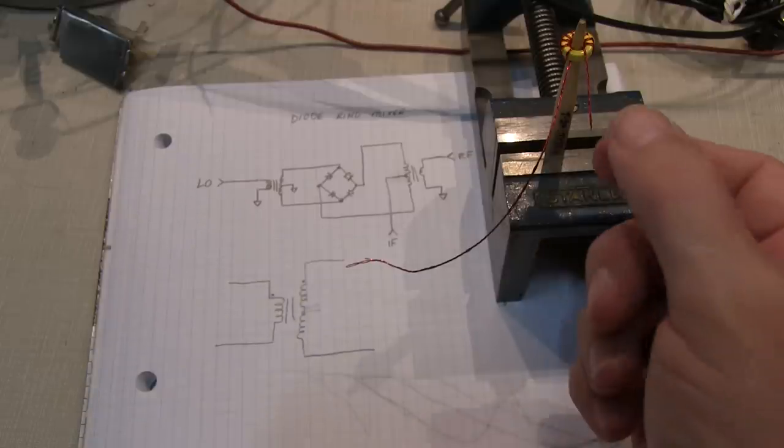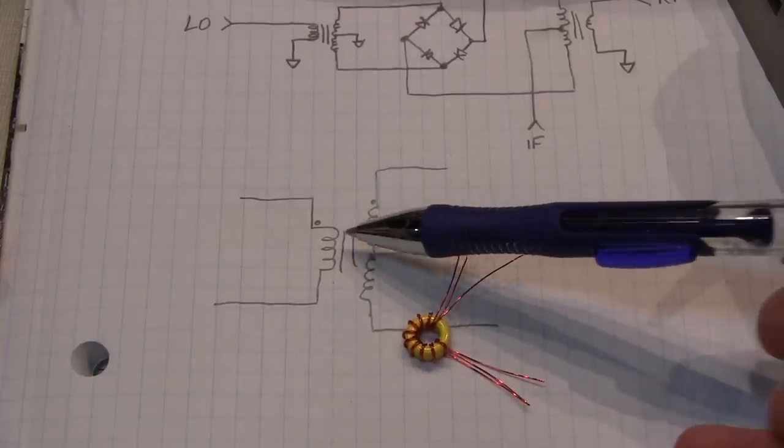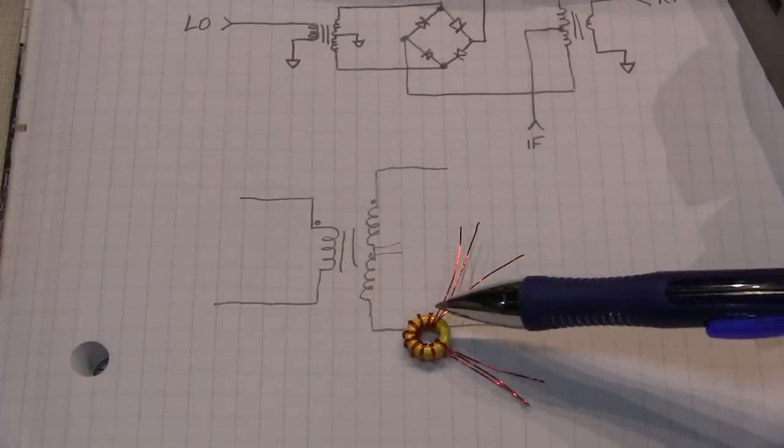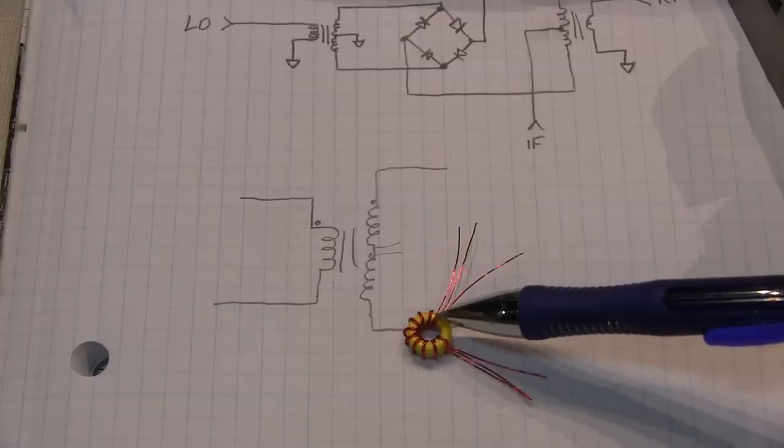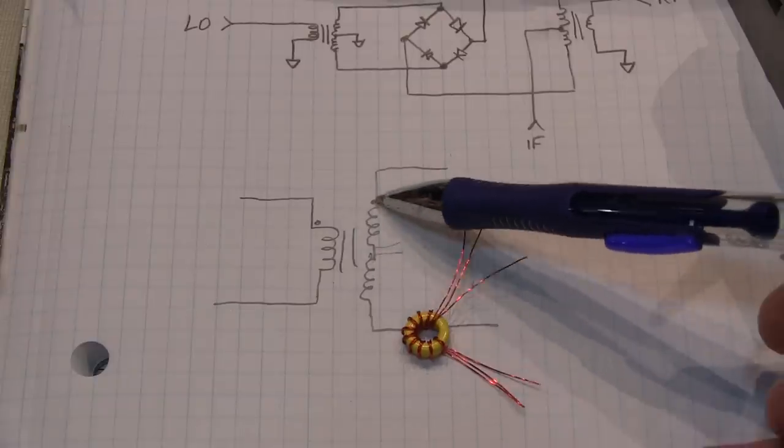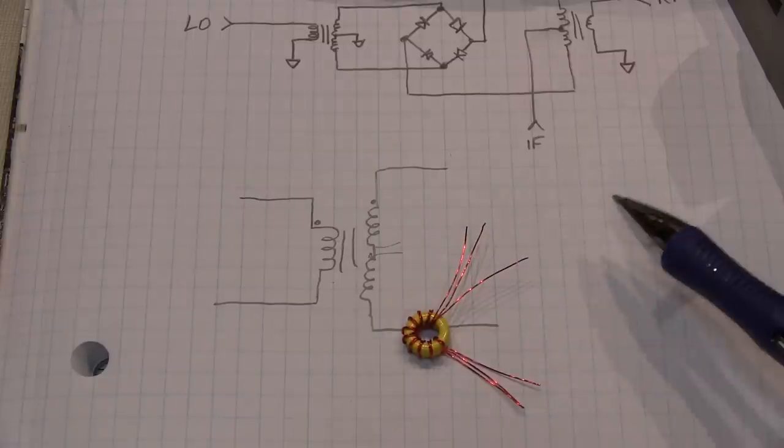So the first thing we'll do is we'll just separate everything out. Now getting the phasing right is easy, which is the starting part of the winding and the ending part of the winding. Because any of the three wires that are coming off the same side of the toroid, we can call those the starting phase. And then off the other side could be the ending phase. So that's the easy part.